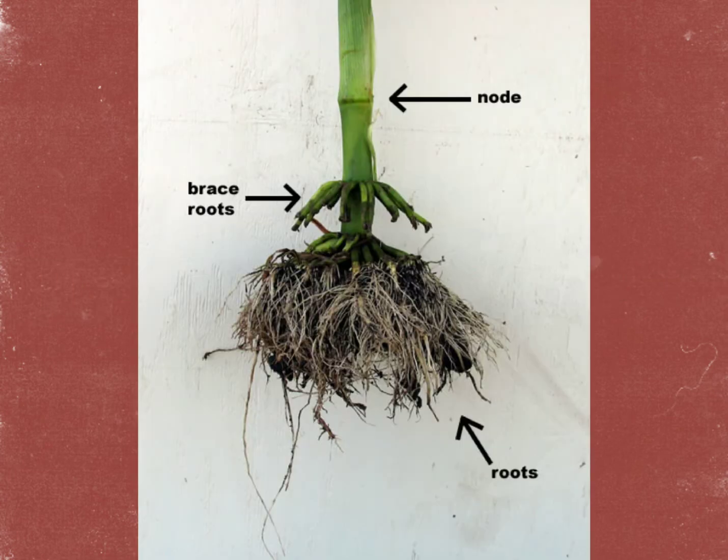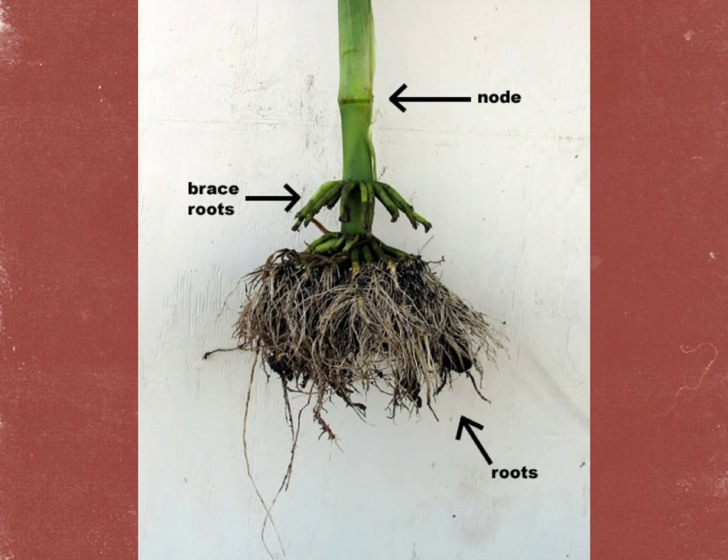Roots grow underground and bring water and nutrients to the rest of the plant. Raised roots — roots that form above ground — form on the sixth node. The first five nodes are below ground where other roots are formed. They grow from the node and then down to the soil and keep the plant standing upright.